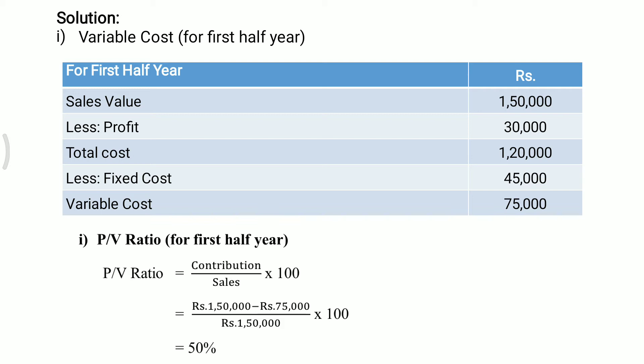Solution: First, we calculate variable cost for the first half year. Sales value 1 lakh 50,000 minus profit 30,000 gives total cost rupees 1 lakh 20,000. From 1 lakh 20,000 we subtract fixed cost 45,000 to get variable cost rupees 75,000.